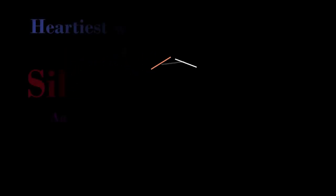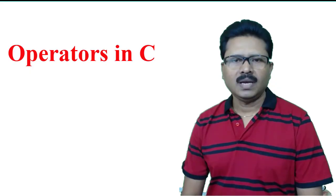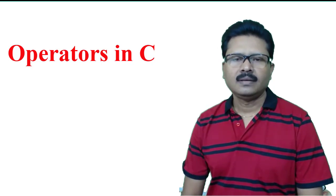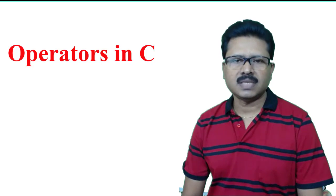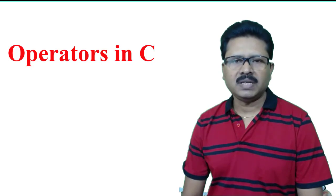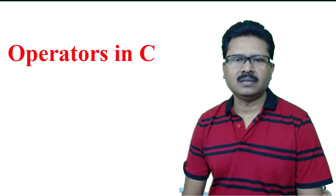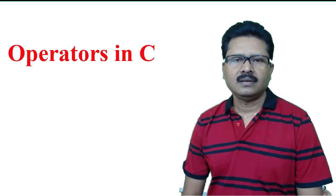Welcome to this tutorial. Here I am going to discuss about operators in C programming. There are different types of operators: arithmetic operator, assignment operator, relational operator, logical operator, bitwise operator, unary operator, size of operator, and conditional operator. I will discuss every one in detail with examples.